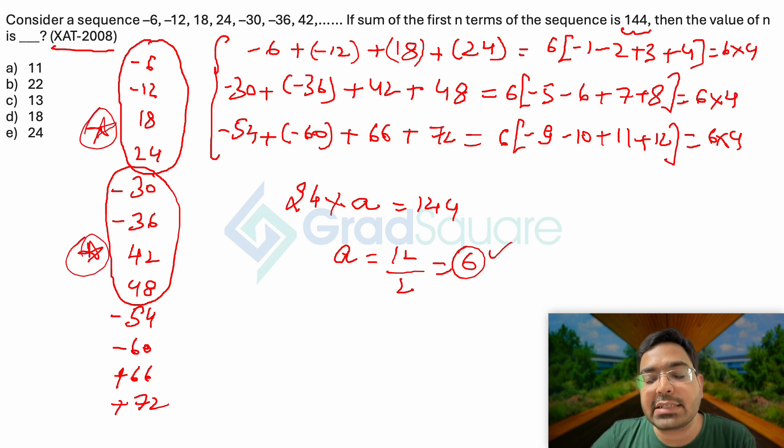6 complete sets. Now each set has got how many numbers? 4 numbers. So 6 complete sets will have how many numbers? 24 numbers, and the answer to this question should be option E, 24.